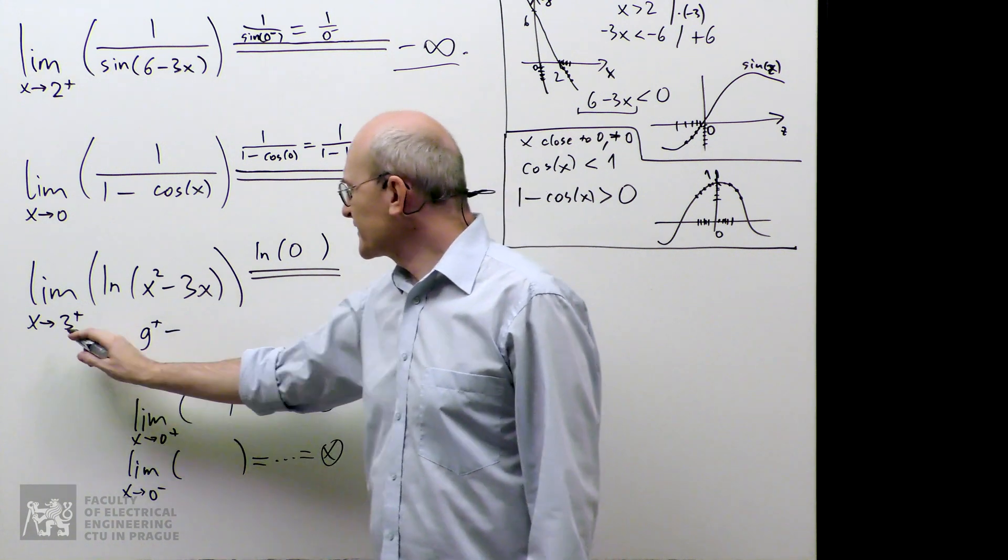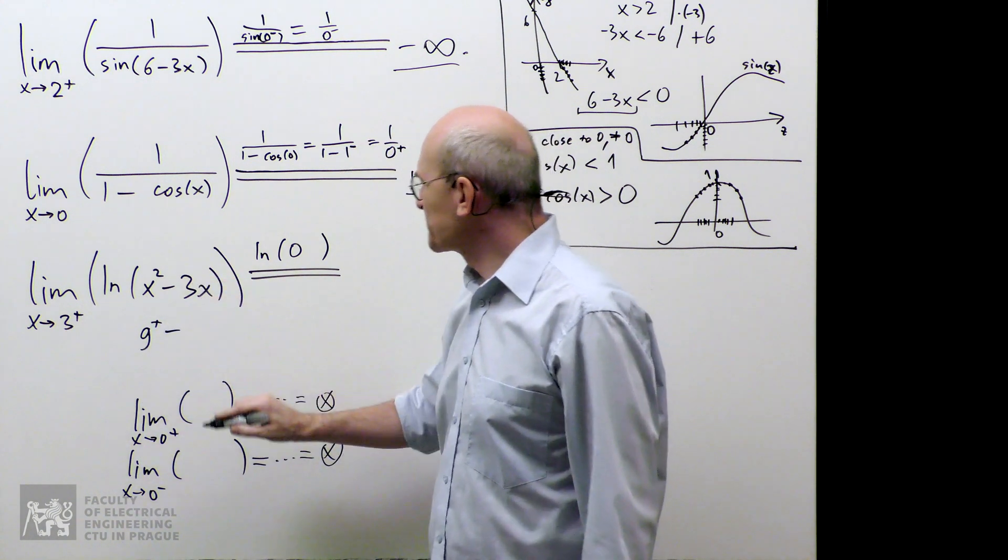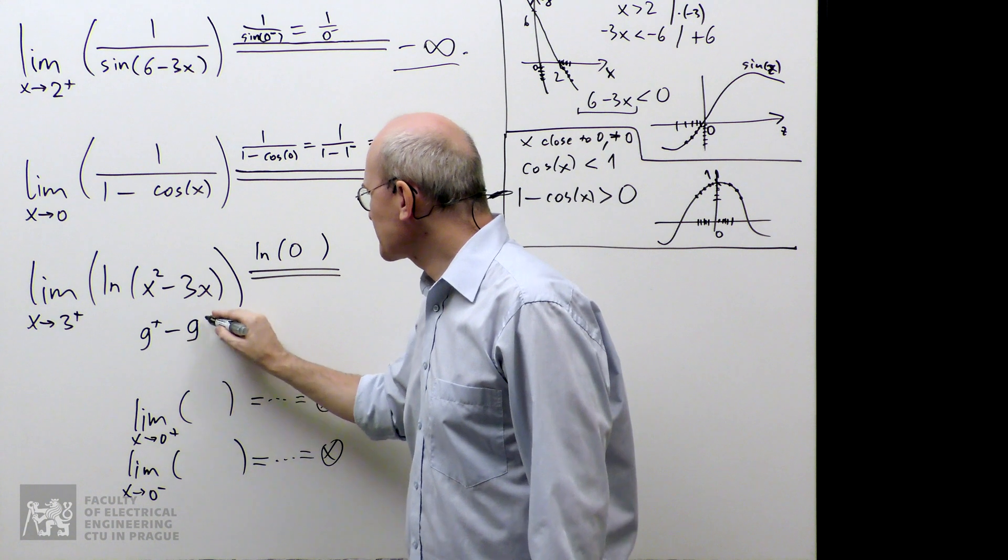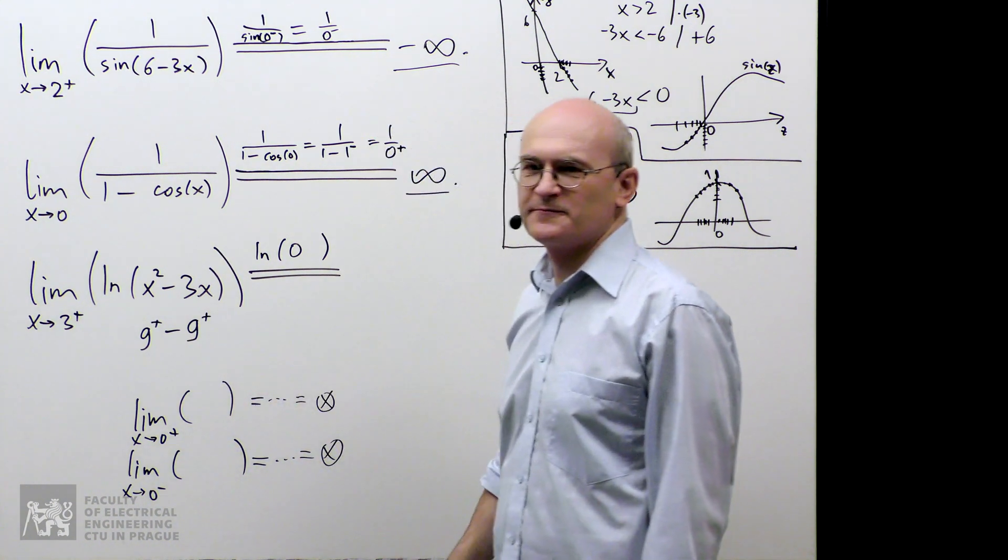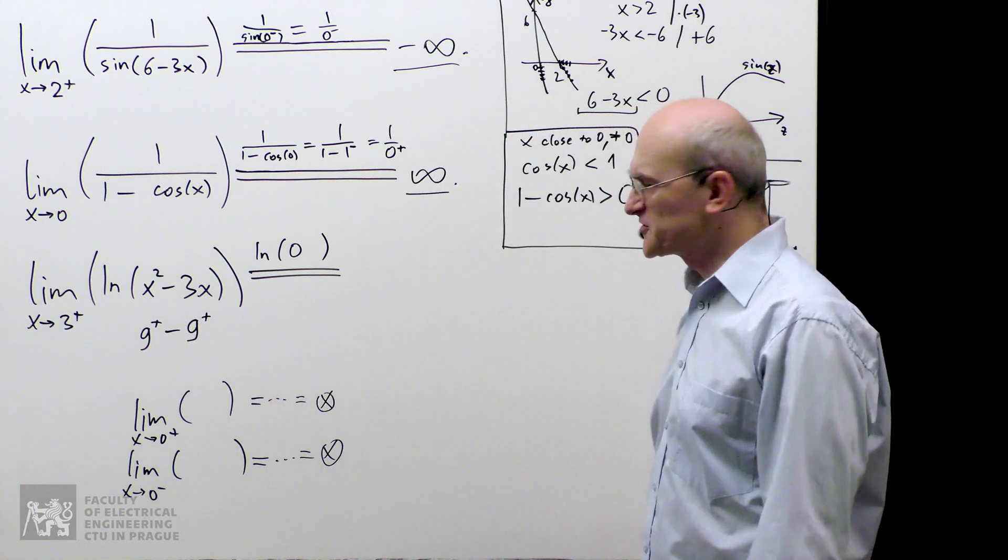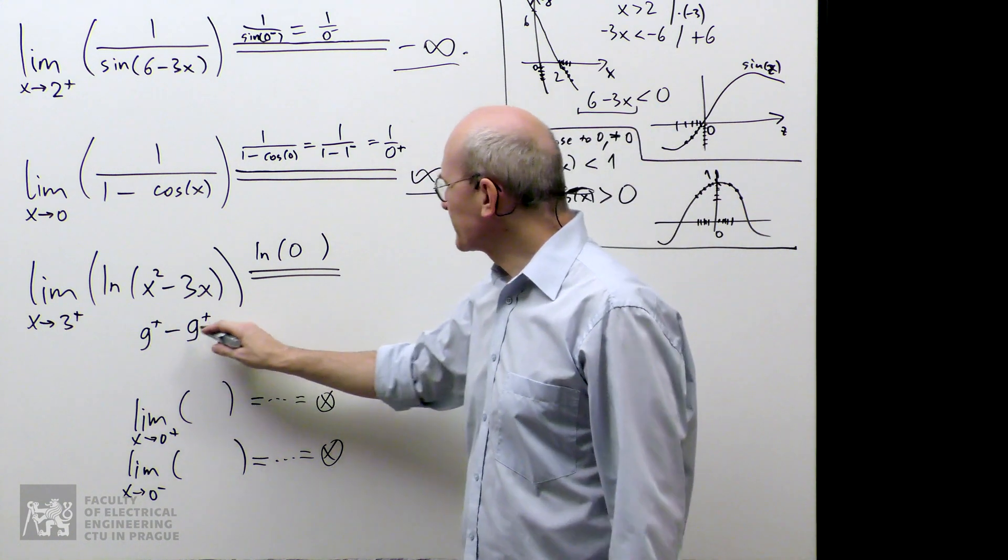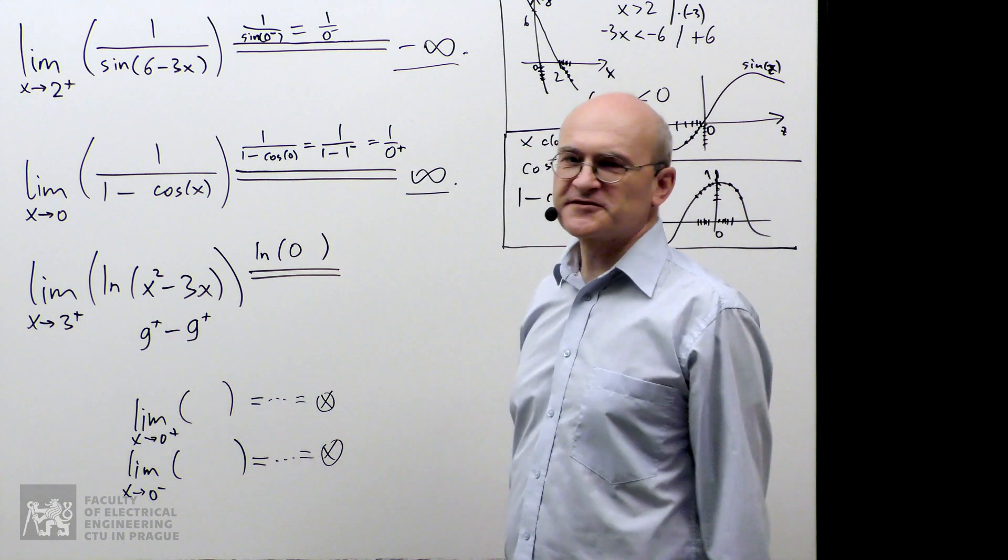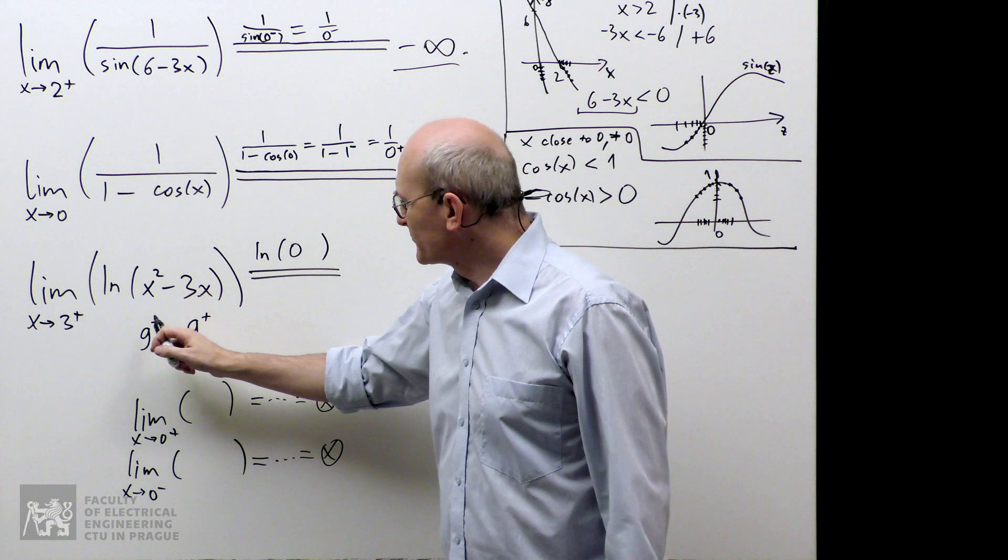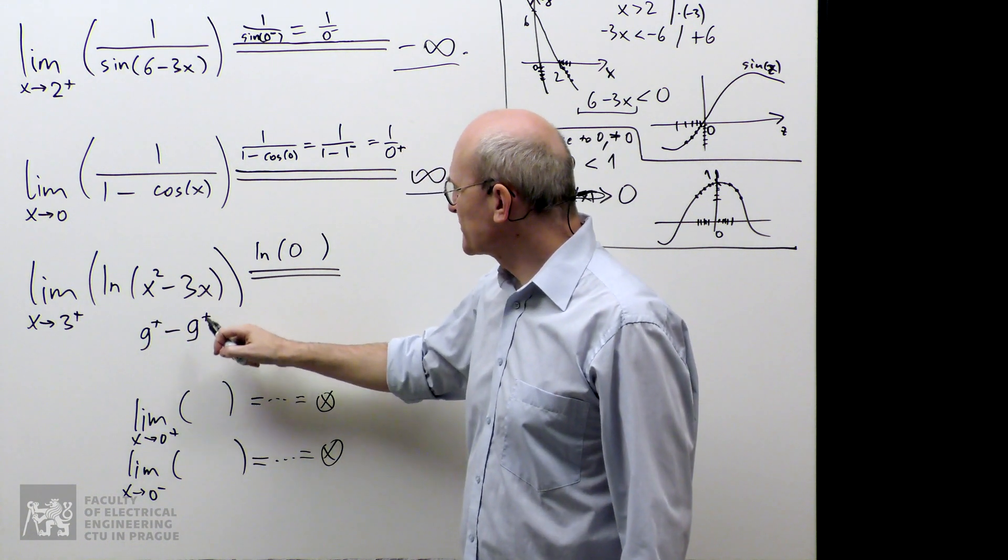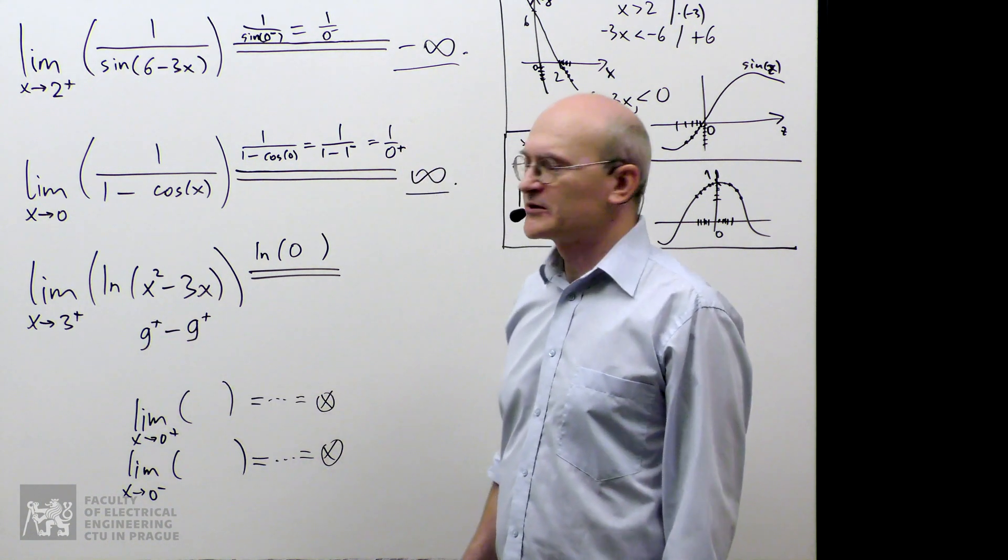And if I take a number which is slightly larger than 3 and multiply it by 3, I get something which is slightly larger than 9. Now, this is interesting. If I subtract, I get 0. That fits. But I have something which is a little bit larger minus something which is a little bit larger than 9. What happens?